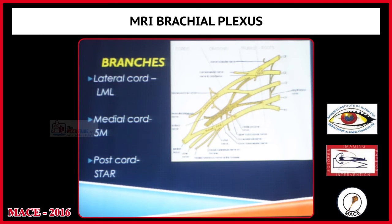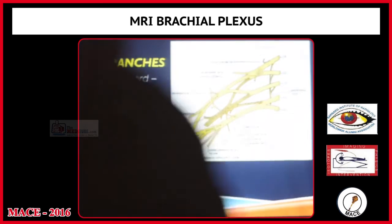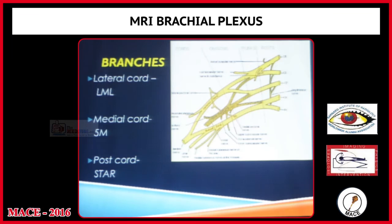Branches from the lateral cord include the lateral part of the median nerve, musculocutaneous nerve, and lateral pectoral nerve. From the medial cord arise the medial part of the median nerve, ulnar nerve, medial pectoral nerve, and medial cutaneous nerves of the arm and forearm. From the posterior cord arise the axillary nerve, radial nerve, thoracodorsal nerve, and upper and lower subscapular nerves.